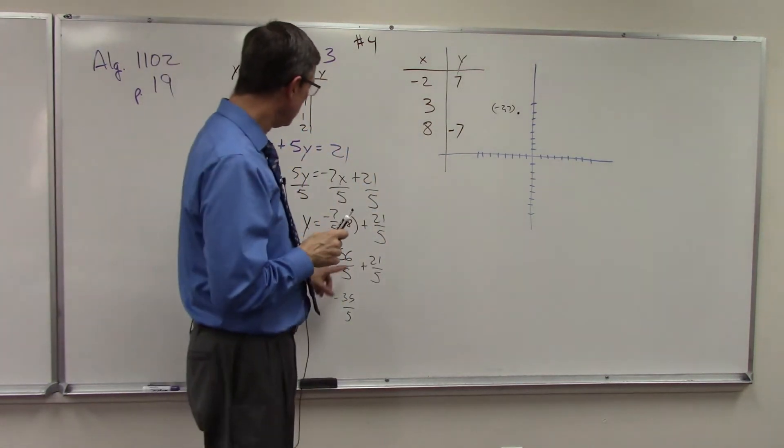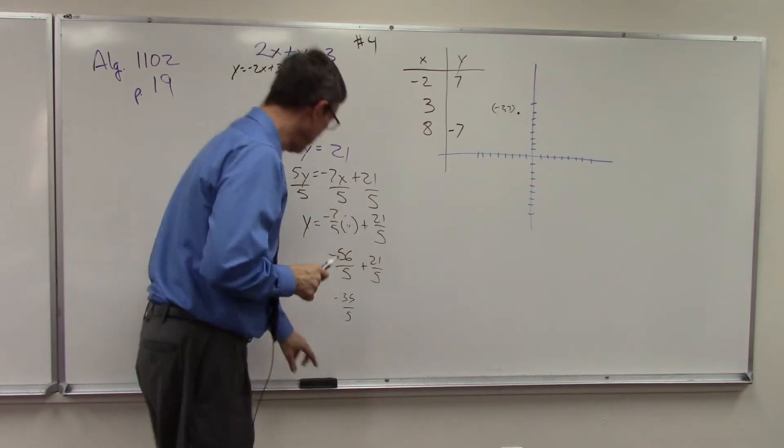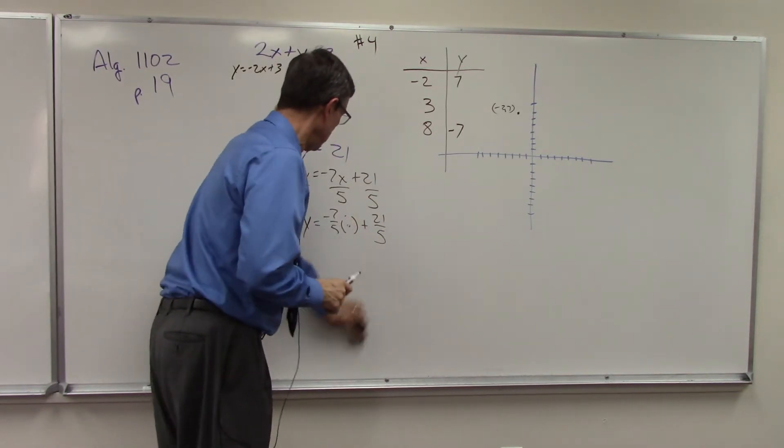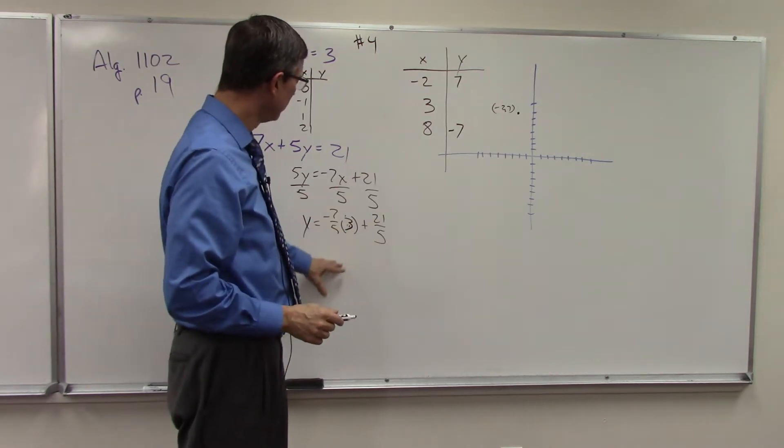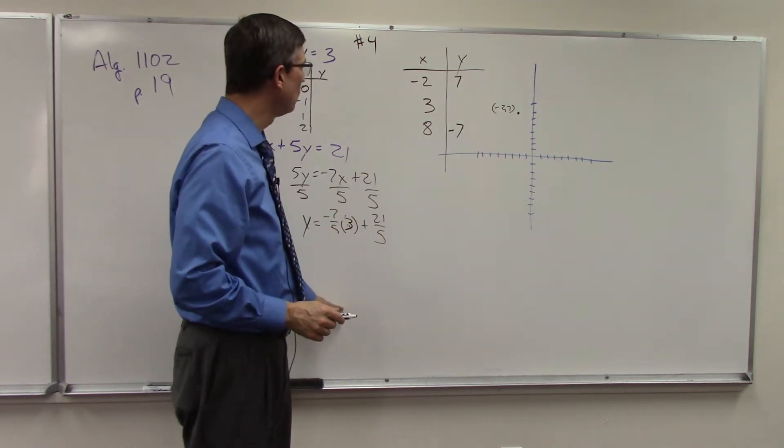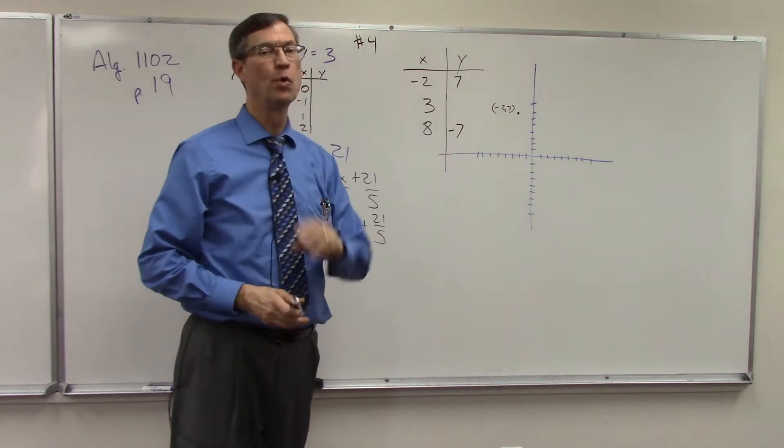Now, I want you to finish, so you plug in 3, and then just follow it through. Come up with two fractions, add them, get a y value. You'll get a whole number here. But now you have three points.